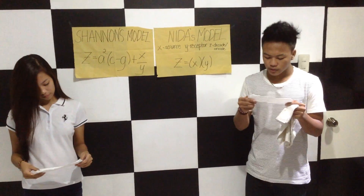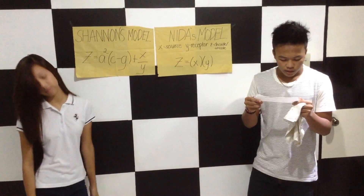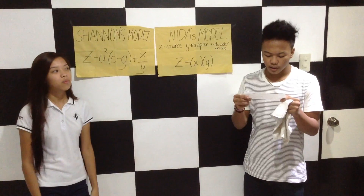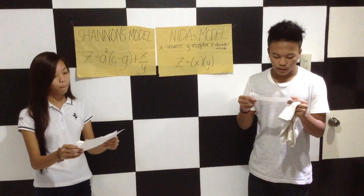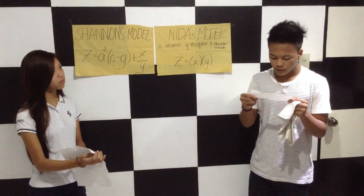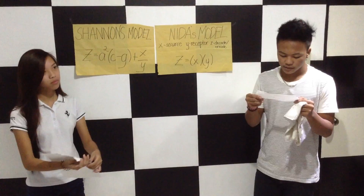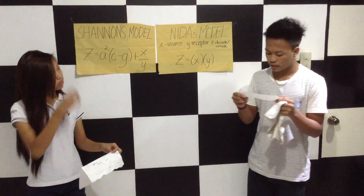When X, the source, sends a message to Y, which is the receptor, the message will be decoded. And when the receptor sends a feedback or message, the source will be encoded.